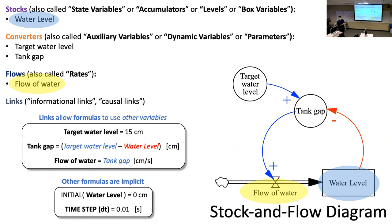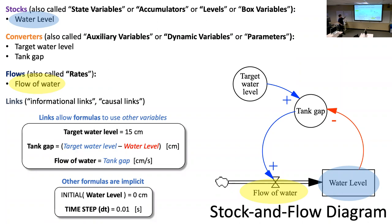You can't reproduce the results unless you have both the diagram and the formulas. Before going into the spreadsheet implementation — any questions about water level being a stock, flow of water being a flow, or any of these formulas?